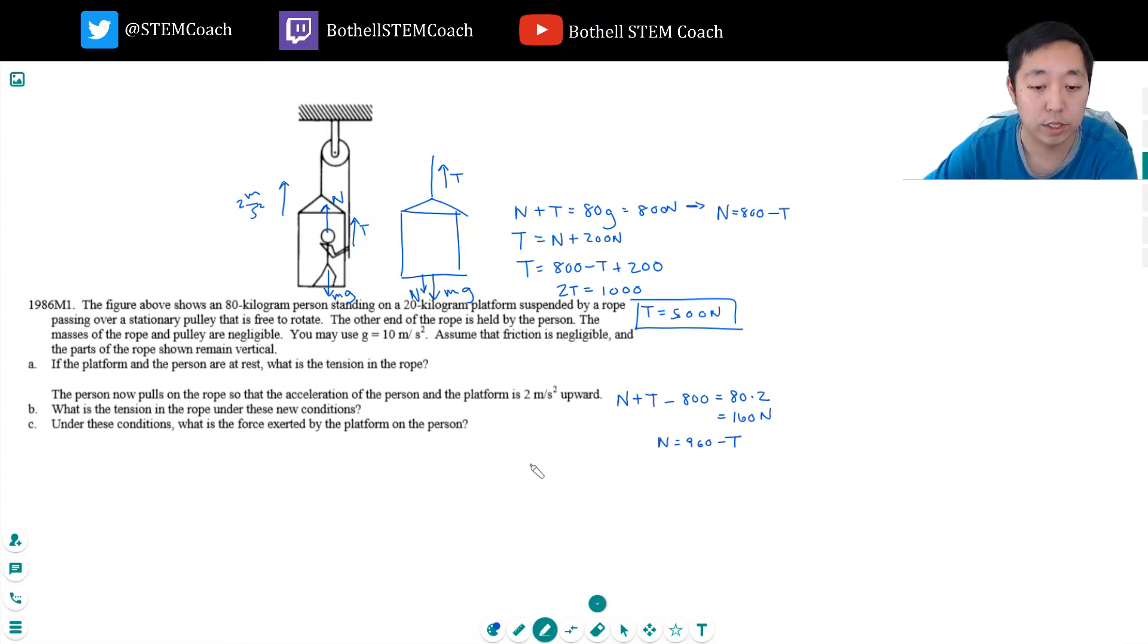This guy's equation for the platform is T minus N minus Mg, which is 20 times 10, 200 newtons. That's the weight of the platform, has to equal 20 times two, his mass times his acceleration, because the platform and the person have to move at the same acceleration. That's equal to 400. So I have T minus N is equal to 600. This is 400, add 200, I get 600. And then I plug this in.